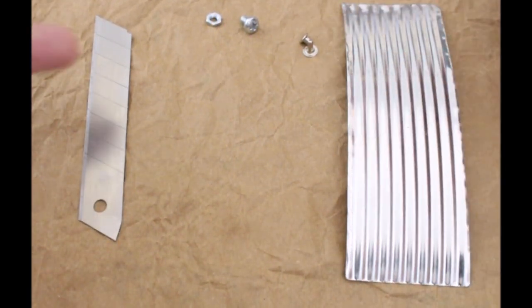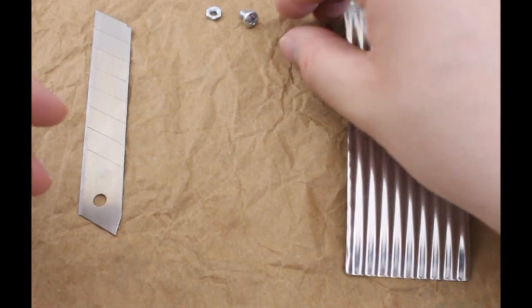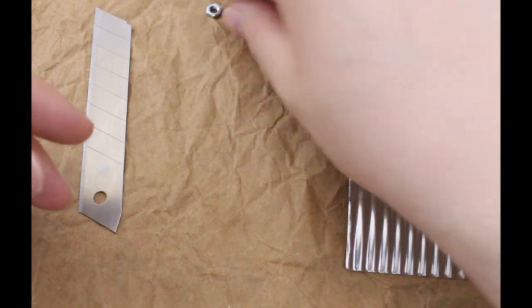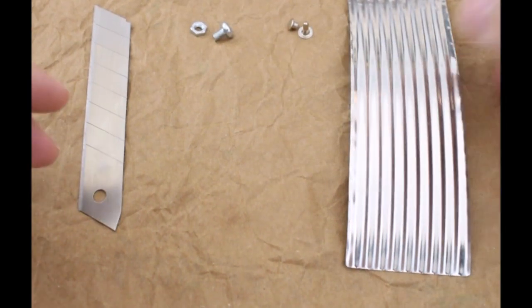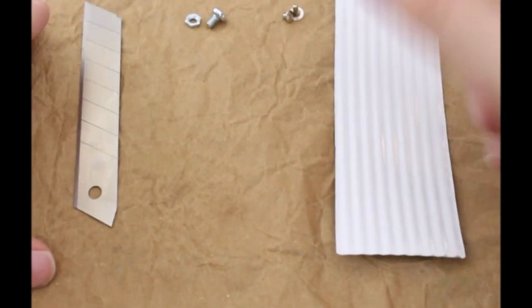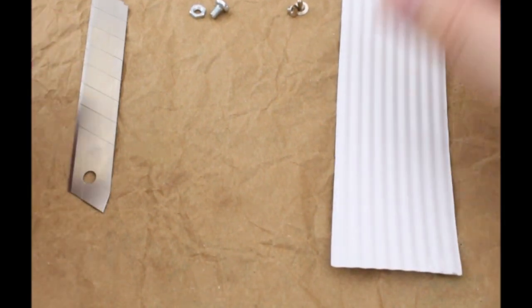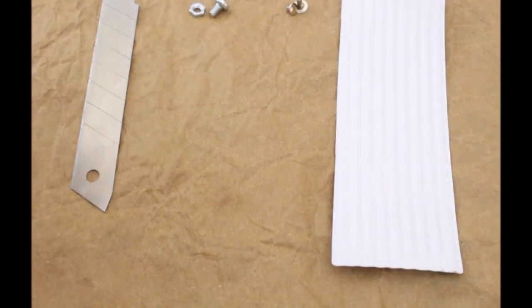So all you need is an X-Acto knife blade, every size will work, a rivet or a nut and bolt, and a piece of sheet metal. This is from an old beans can but you can of course use some aluminum sheet or brass if you like. It doesn't really matter.